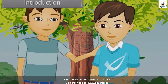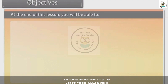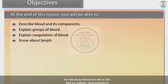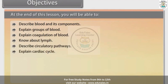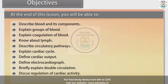Sure. In this lesson, you will learn about body fluids and circulation in the human body. At the end of this lesson, you will be able to: describe blood and its components, explain groups of blood, explain coagulation of blood, know about lymph, describe circulatory pathways, explain cardiac cycle, define cardiac output, define electrocardiograph, briefly explain double circulation, and discuss regulation of cardiac activity.